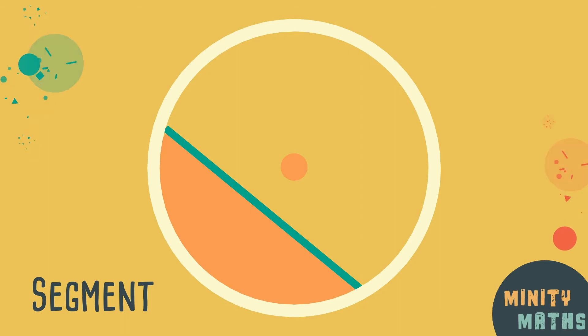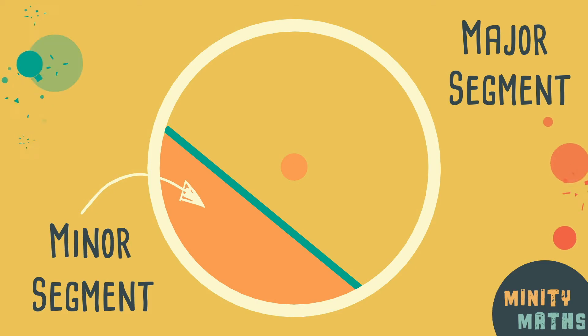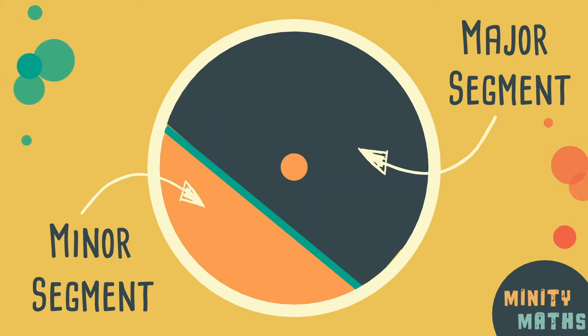If the segment is smaller than a semicircle, it is a minor segment. If it is bigger than a semicircle, it is called a major segment.